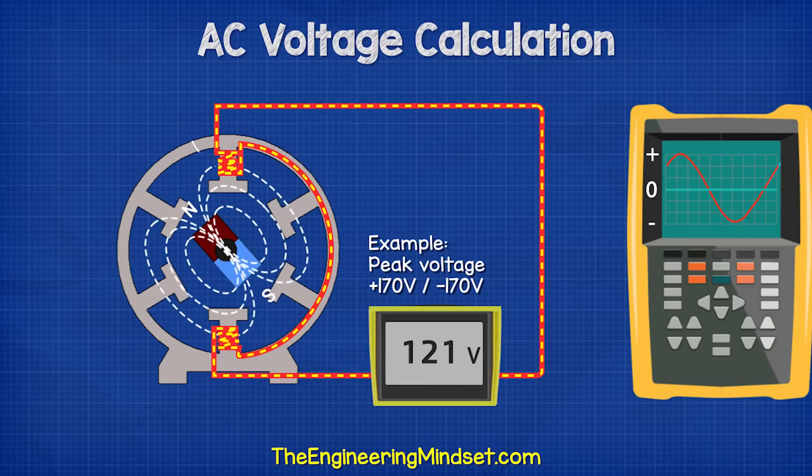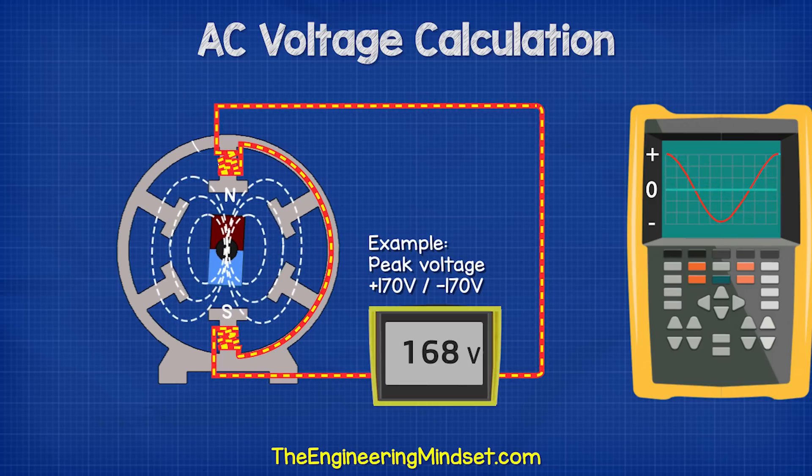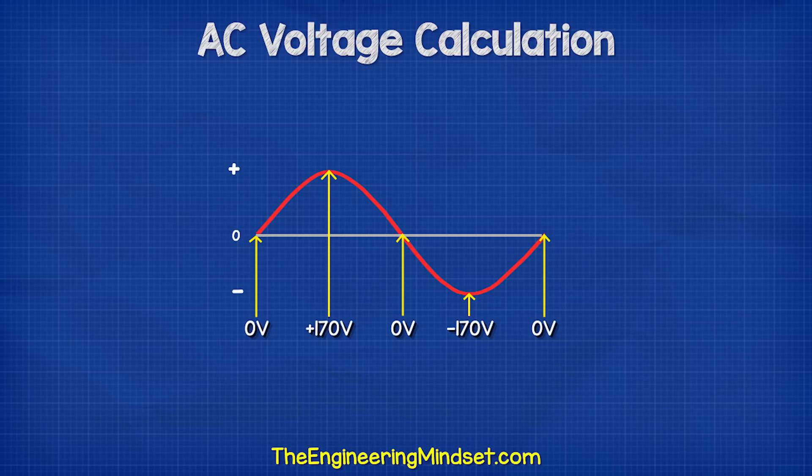This example reaches 170 volts at its peaks. So if we plotted these values, we have positive and negative peaks of 170 volts. If we took the average of these values, we would get 0 volts.